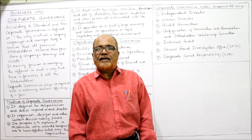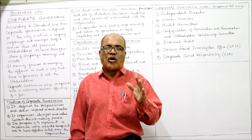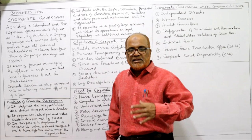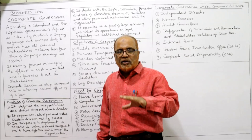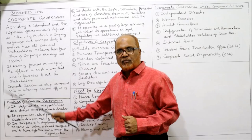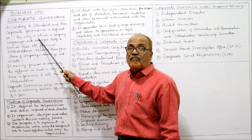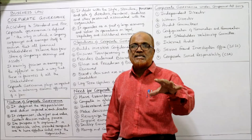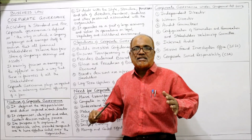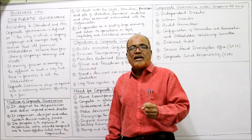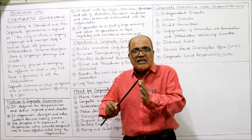Now we will start the next topic: Corporate Governance. What is the meaning of the term corporate governance? According to Standard & Poor's, corporate governance is defined as the way in which the company organizes and manages its affairs. In this company form of organization, there is a separation between management and owners — the management is in the hands of directors, whereas the owners are the shareholders and investors. The investors have invested the money, but the company is managed by directors.